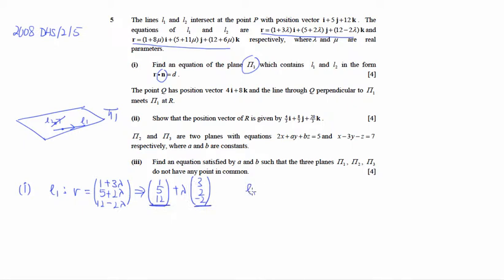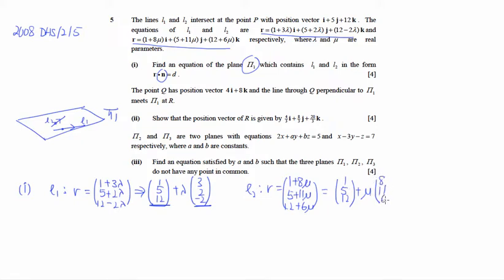This gives us a point (1, 5, 12) on L1 as well as direction vector (3, 2, −2). Now let's do the same for L2. L2 will be r = (1 + 8μ, 5 + 11μ, 12 + 6μ). This tells us the point on L2 is (1, 5, 12) and the direction vector of L2 is (8, 11, 6). This is a much more useful form.